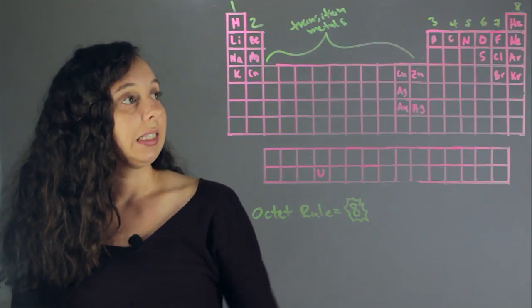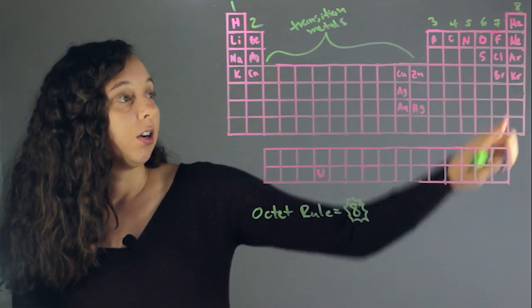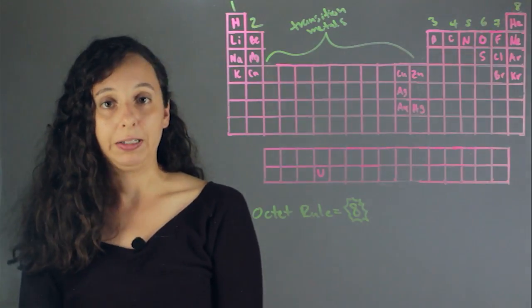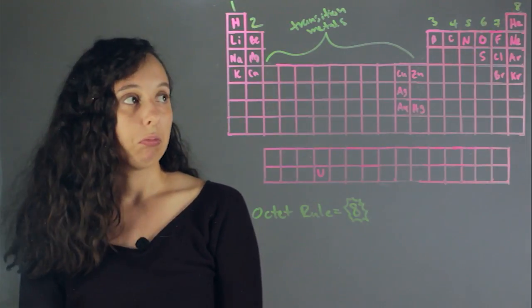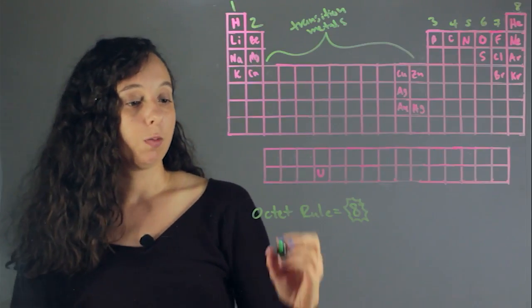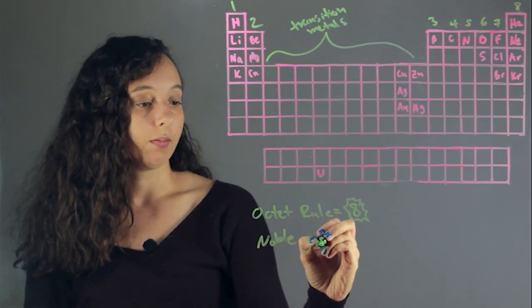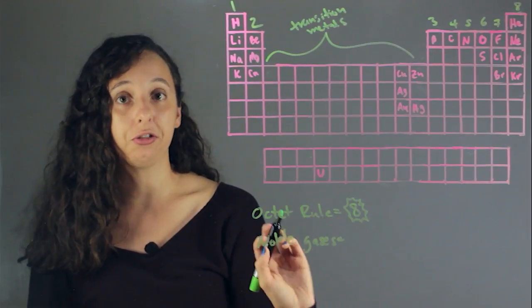So that means that the noble gases over here in group eight already have all their valence electrons. They don't want to get any more, they don't want to lose any more. So that means the noble gases are pretty inert. They're happy already, they're done reacting.